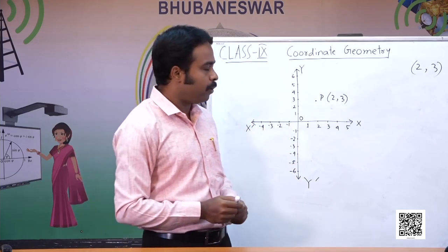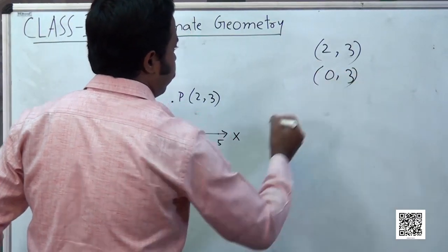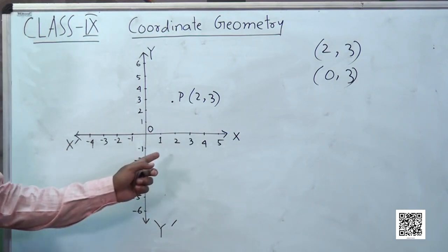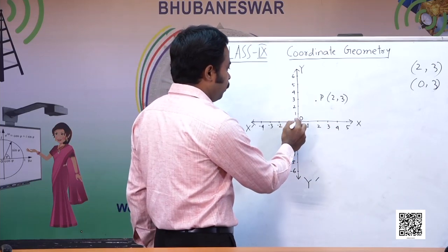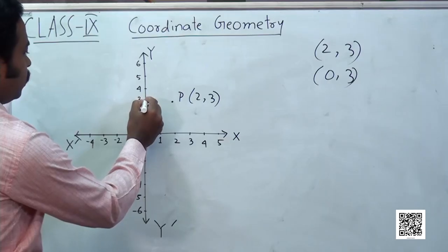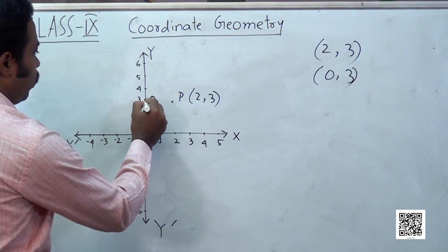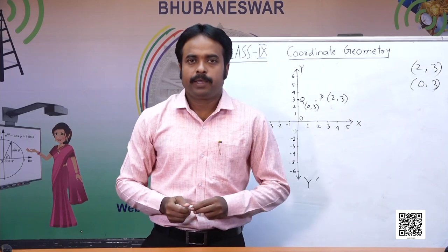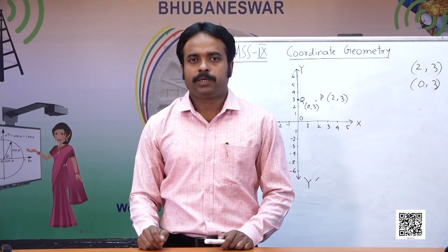Now if we plot another point 0 comma 3 — this is lying on the y-axis, meaning the x-component is 0 and the y-component is 3. So if we take this as Q, then this point is 0 comma 3. In this way, if the coordinates are given, we can very easily plot the point.